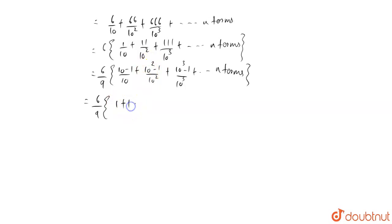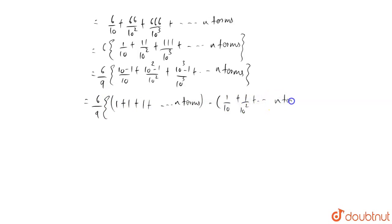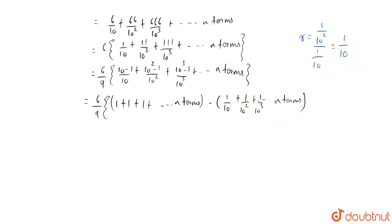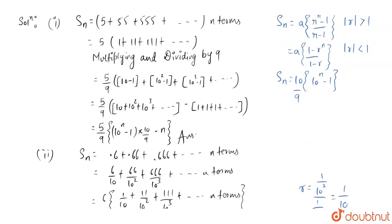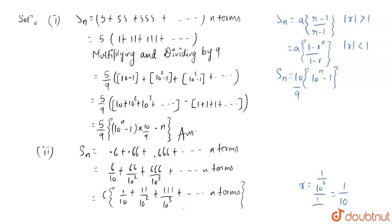Here, 1 can be taken common: 1 plus 1 plus 1 up till N terms. We can also write 1 by 10 cube. Now here we can see 1 by 10, 1 by 10 squared, 1 by 10 cubed are in GP. The common ratio is 1 by 10 squared upon 1 by 10, which is 1 by 10. This is the same as 1 by 10 cubed upon 1 by 10 squared, and here we can see the common ratio R is less than 1. So we will use the second formula: A into 1 minus R to the power N, upon 1 minus R.